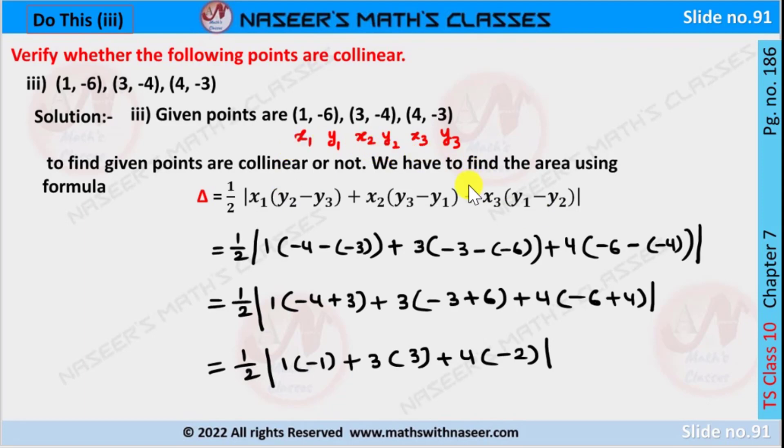then we get 1/2 mod [1 into (−4−(−3)) + 3 into (−3−(−6)) + 4 into (−6−(−4))]. Here minus into minus is plus,